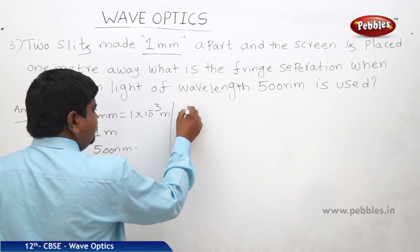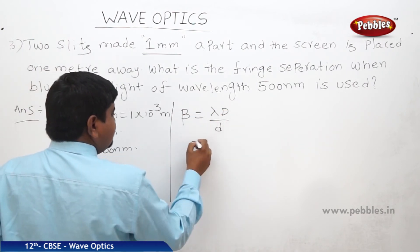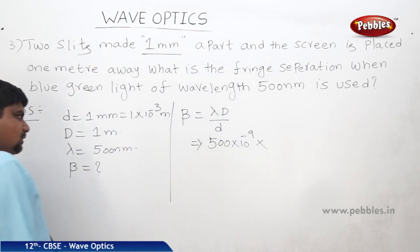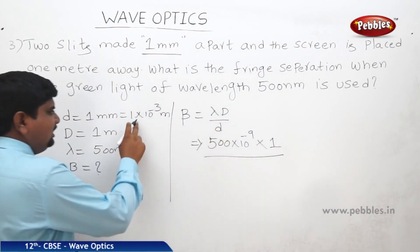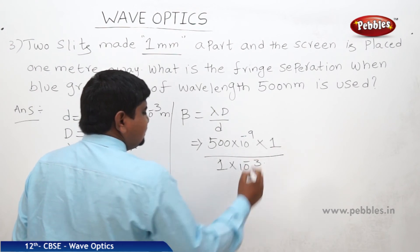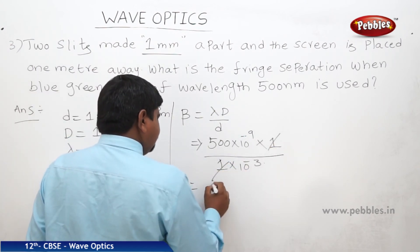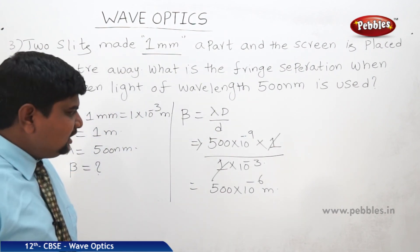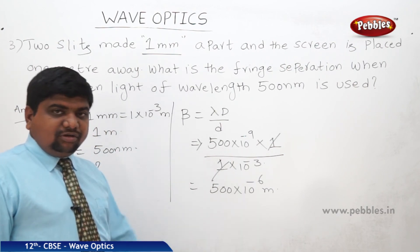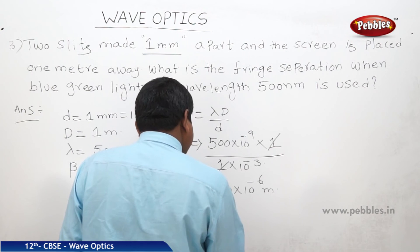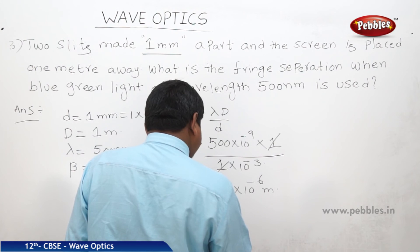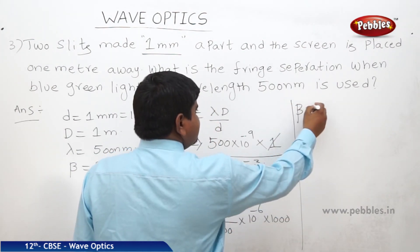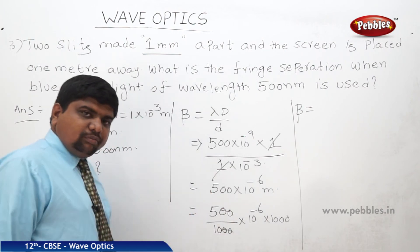Therefore beta is equal to lambda capital D by small d. Lambda is 500 nanometers, which is 500 into 10 to the power of minus 9 meters. Capital D is 1 meter, and small d is 1 into 10 to the power of minus 3 meters. This gives 500 into 10 to the power of minus 6 meters, which is 500 micrometers. Converting to millimeters: 500 by 1000 gives 0.5.